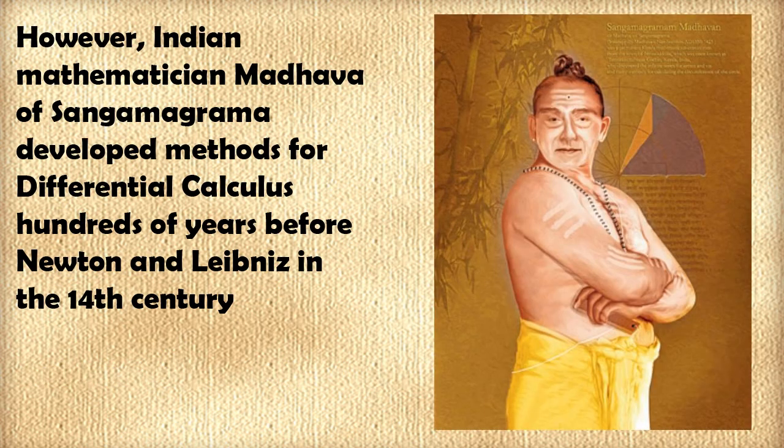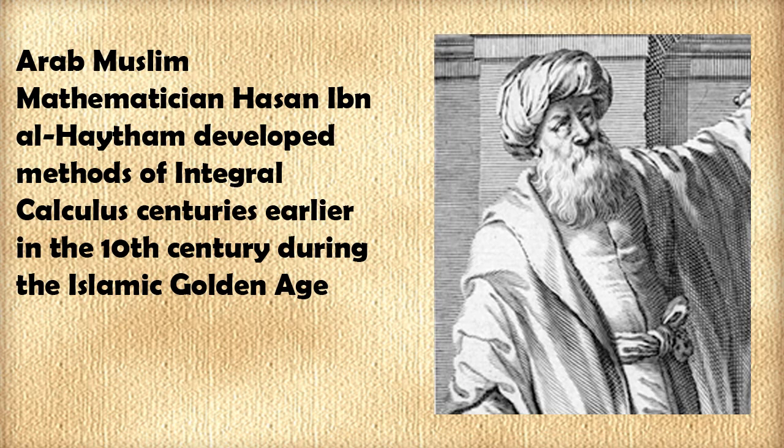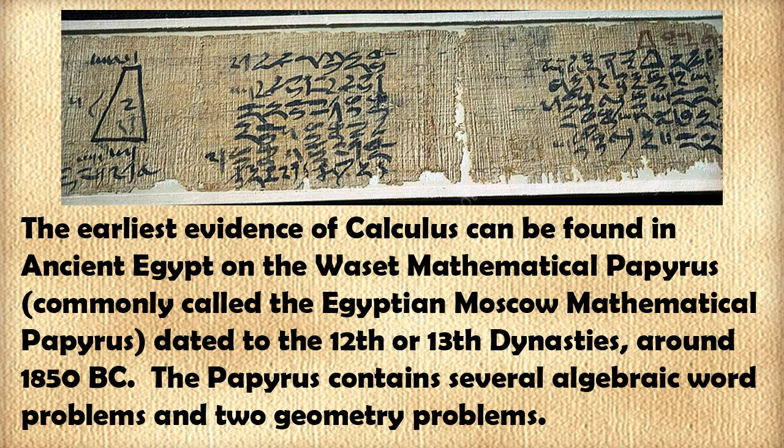However, Indian mathematicians developed methods for differential calculus hundreds of years before Newton and Leibniz in the 14th century, and Arab-Muslim mathematicians developed methods of integral calculus centuries earlier in the 10th century during the Islamic Golden Age. However, the earliest evidence of calculus can be found with the ancient Africans in Egypt.